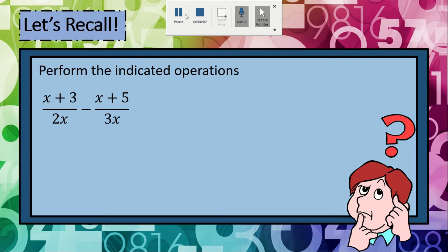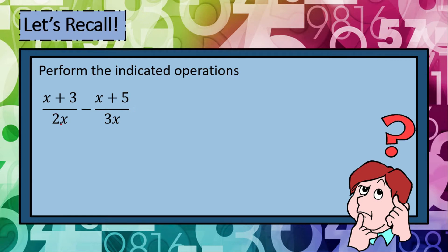Example number 2: Perform the indicated operations. We have x plus 3 over 2x minus x plus 5 over 3x. Our first step is to find the LCD or the least common denominator. Here we have 2x and 3x, so the LCD is 6x. We divide the LCD by the denominator: 6x divided by 2x is 3.